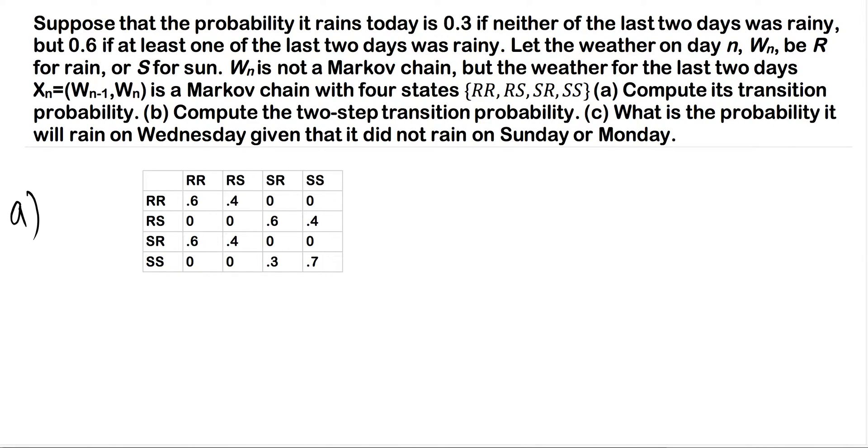meaning two days of rain, a day of rain and a day of sun, a day of sun and a day of rain, and then two days of sun. Part A, compute its transition probability.